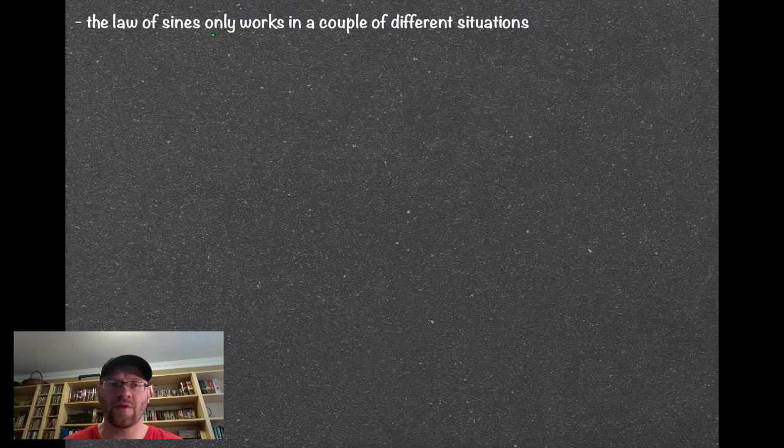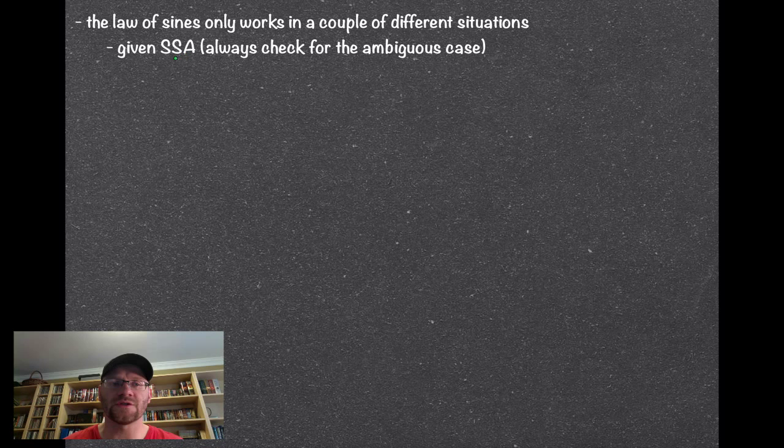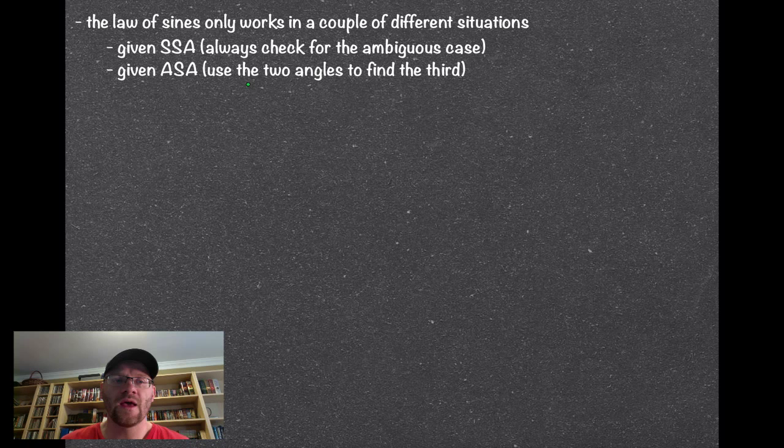So the law of sines, which we developed the other day, only works in a couple of different situations. The first situation, if we were given side, side angle, so two sides and the next angle, and that was the ambiguous case as well, so we always had to check for the ambiguous case. And our second situation was if we were given angle, side angle, we could use the two angles to find the third and then use the law of sines.